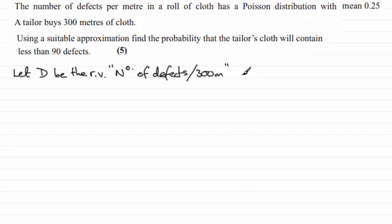Now we're told that the number of defects follows a Poisson distribution with a mean of 0.25 every one meter. So for 300 meters we can say D would be distributed as a Poisson distribution, but the mean will be 300 times more than 0.25. And if you do 300 times 0.25 you'll find you get 75, so a mean of 75 defects per 300 meters.